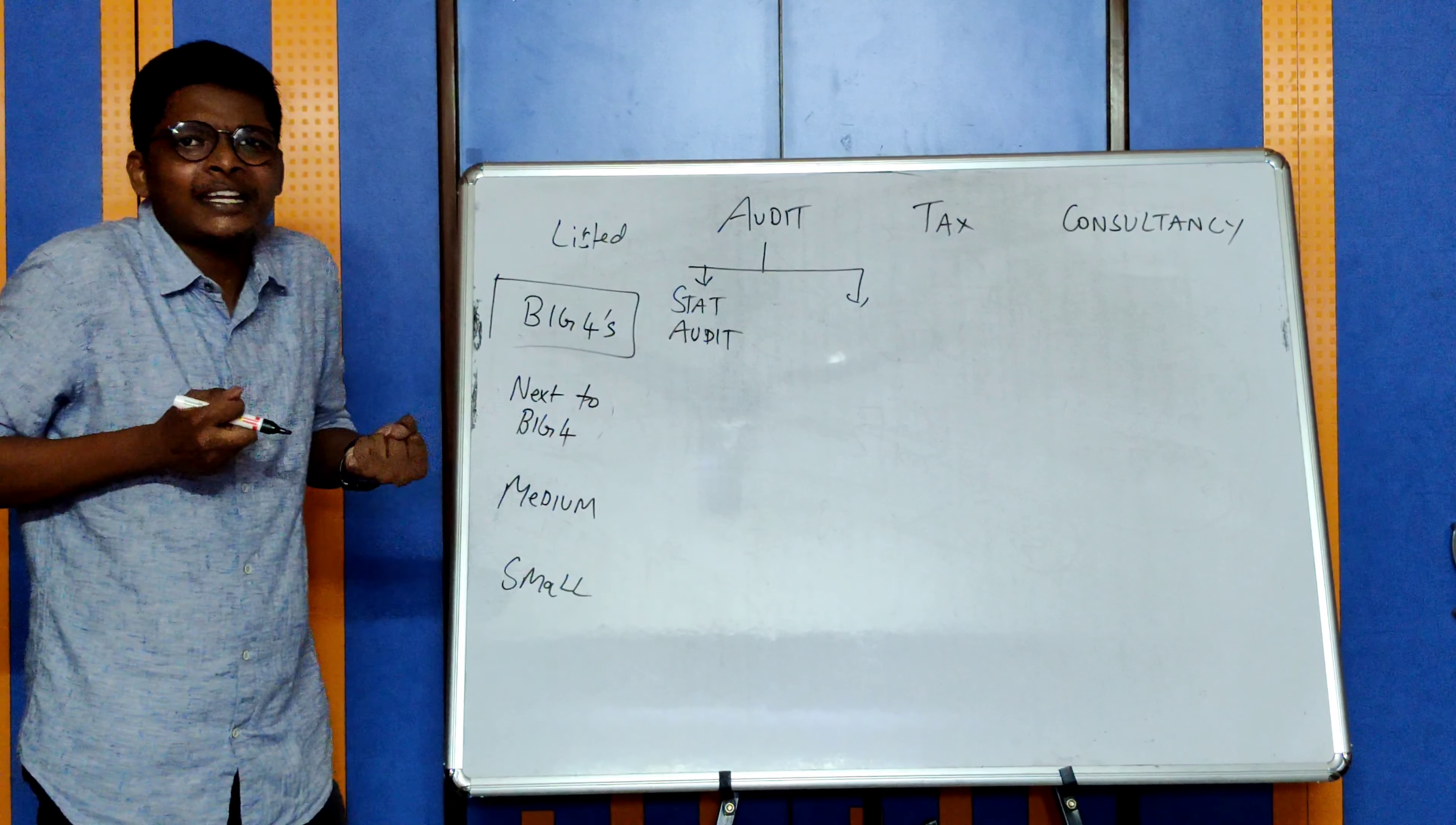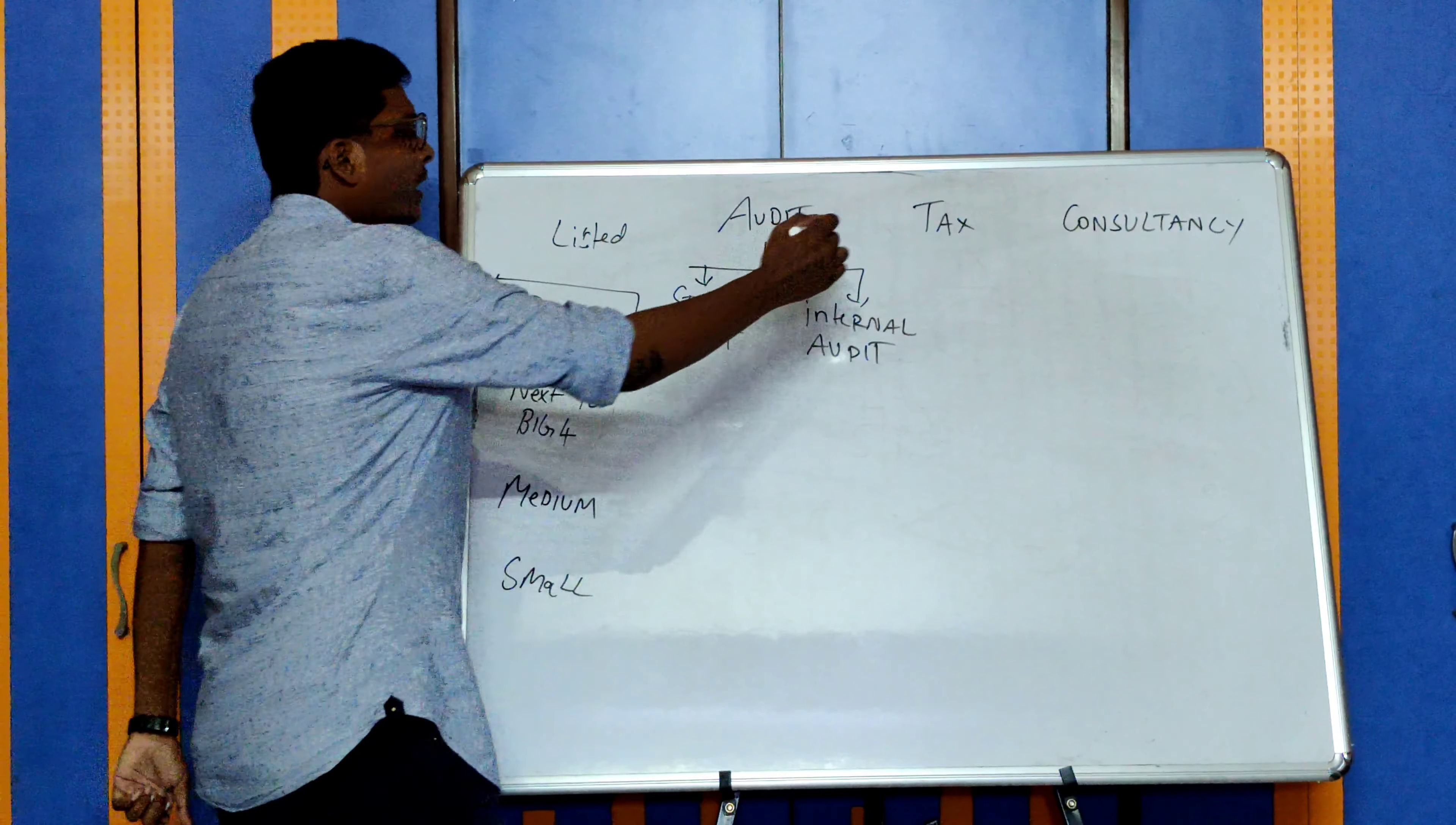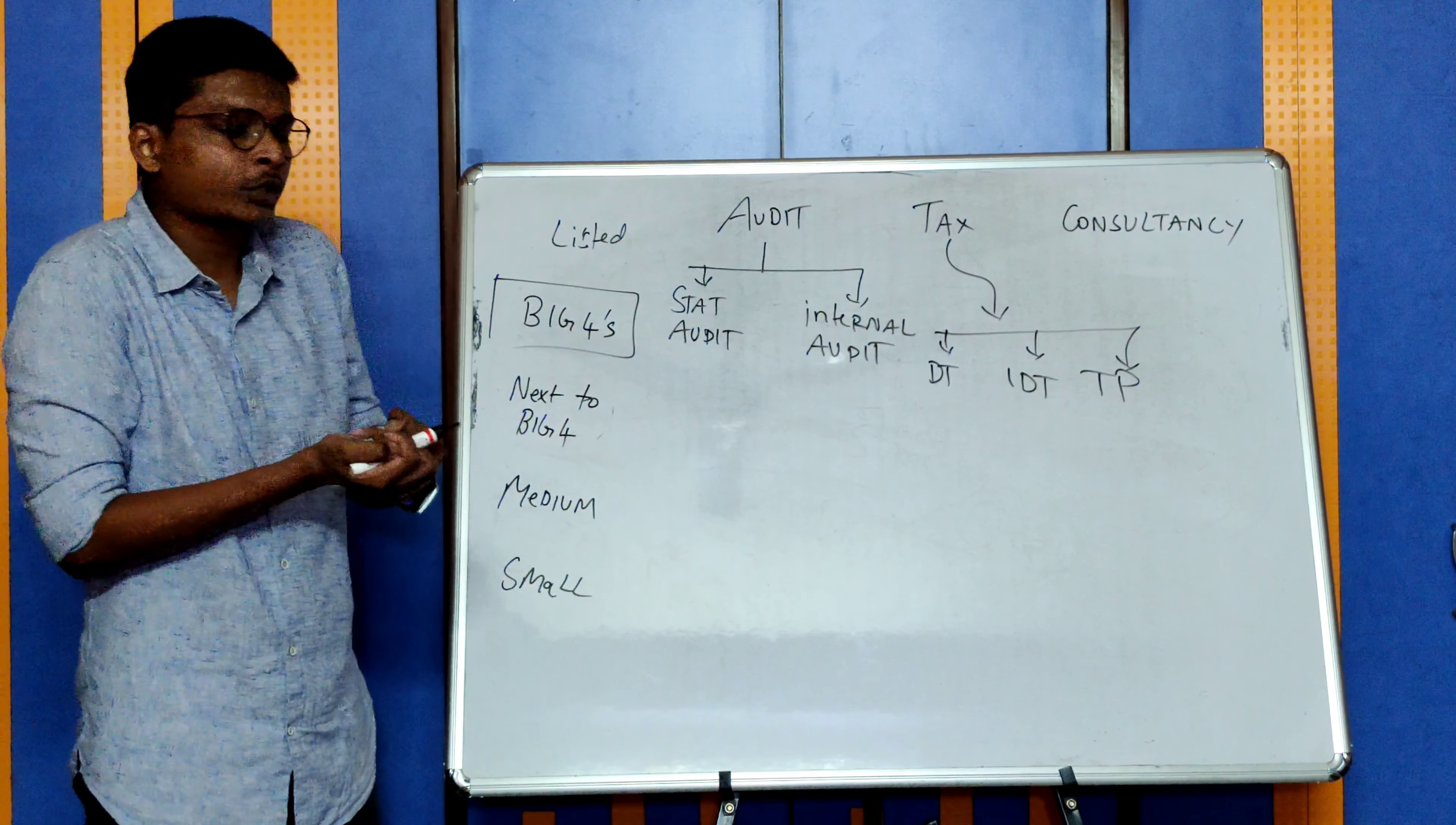Next is internal audit. Some firms call it risk assurance or risk advisory, but primarily the work is internal audit with some other support services. Coming to tax, it can be classified into direct tax, indirect tax, and transfer pricing. Transfer pricing is a subset of direct tax, but Big Four have a separate department for it. In direct tax, you will be doing income tax work.